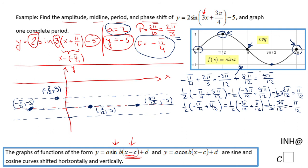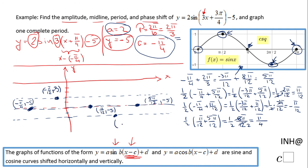The minimum is halfway between π/12 and 5π/12. Adding those x-coordinates gives 6π/12, and multiplying by one-half gives π/4. Since this is a minimum, it is two units below the midline at y = −7, so the point is (π/4, −7).